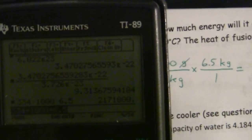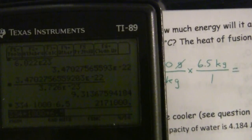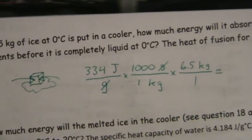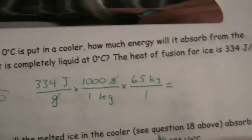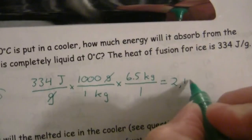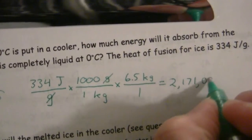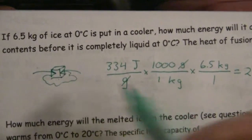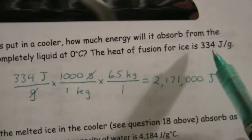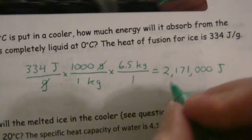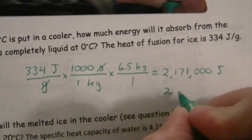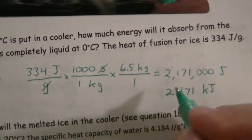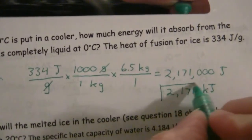And we get 2,171,000 joules. So we can write that like this. Or, I didn't specify anything here, so we could leave it like that, but it makes more sense to write this as 2,171 kilojoules. Quite a bit of energy, actually.